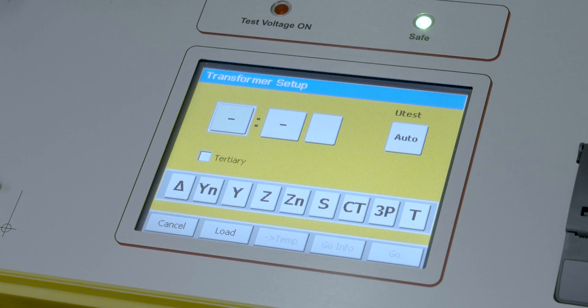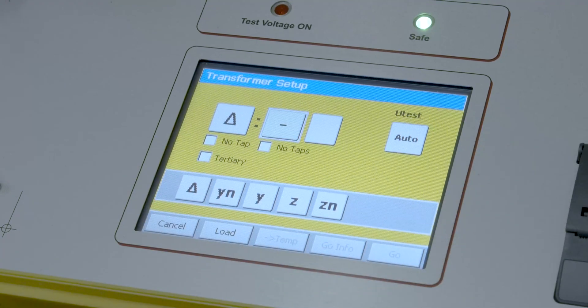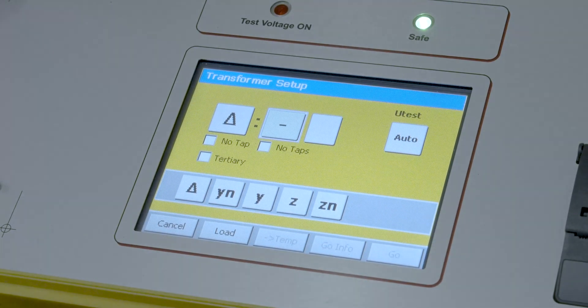We know that this is a delta delta transformer so the far left side is going to be the primary. We'll select the delta and then just on the other side of the colon is going to be your secondary side.